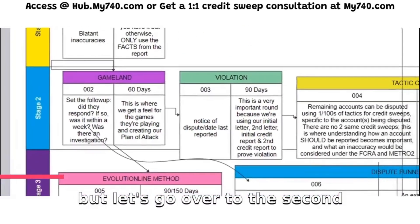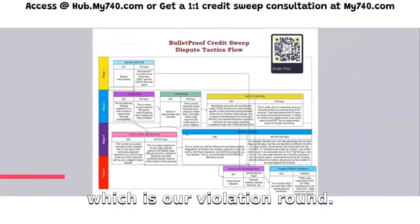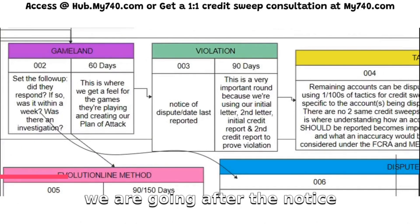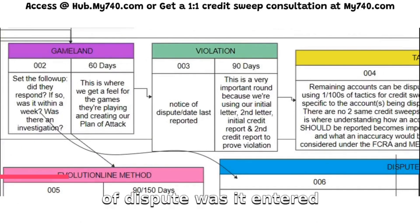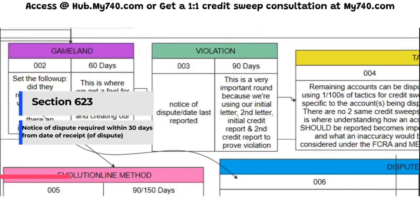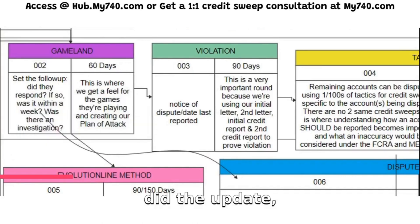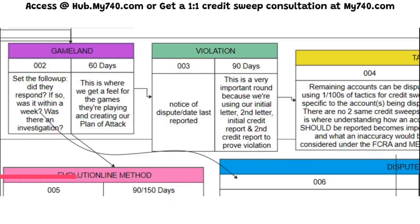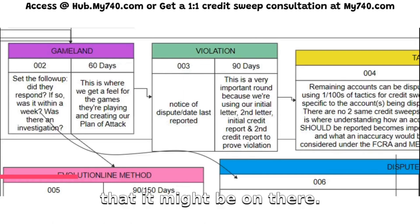Let's go to the second part of stage two, which is our violation round. In our violation round, we are going after the notice of dispute. Was it entered within 30 days after they received your first dispute? If not, it's a violation pursuant to section 6623. Did they update or change the date last reported — which might also appear as 'status update date' or 'date last reported'? There are three different ways it might appear.